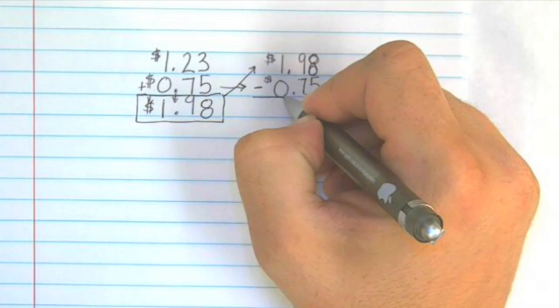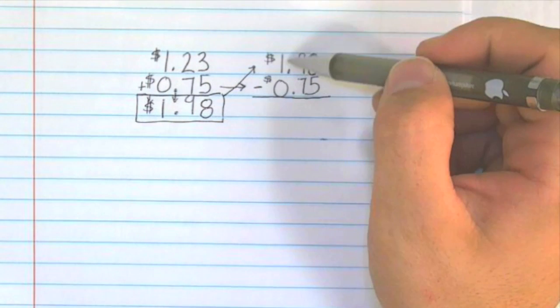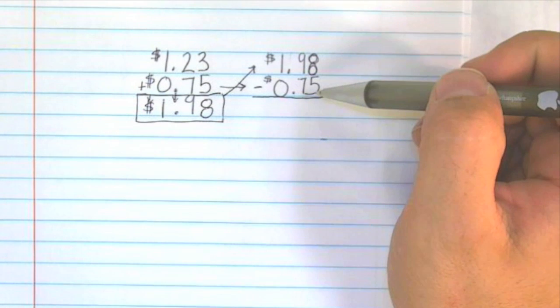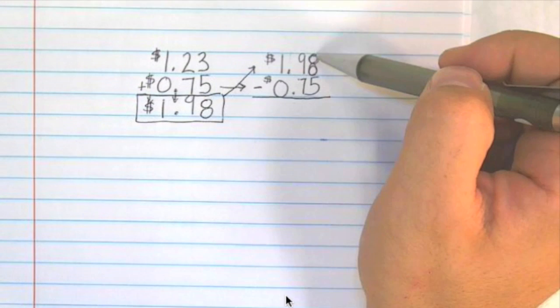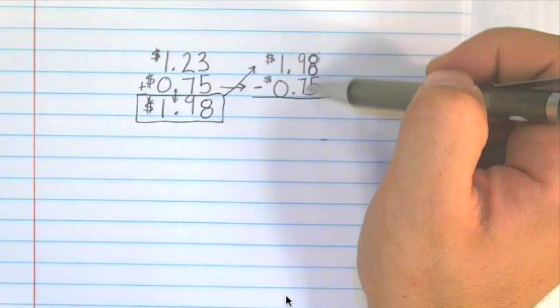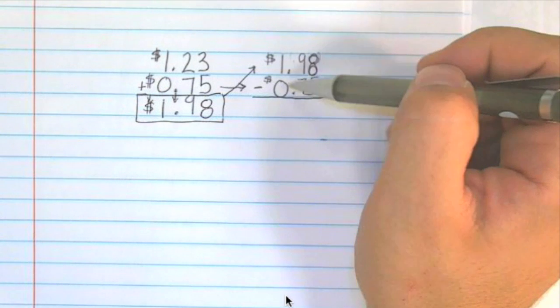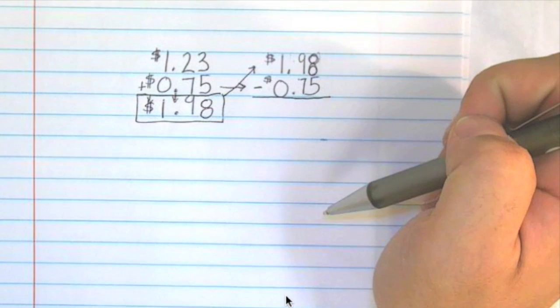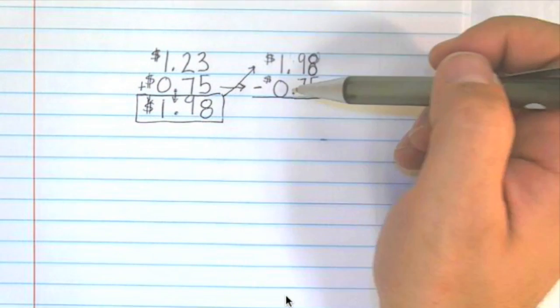Again, we want to make sure everything is lined up neatly, and if you do that, I guarantee it will be easier. So again, just double check to make sure your digits are lined up vertically, and the decimal is lined up vertically, and your dollar sign is lined up vertically. If you do this, it will make your life much easier as a mathematician.